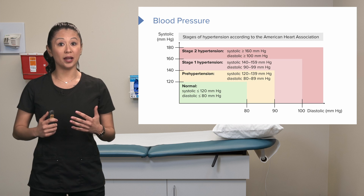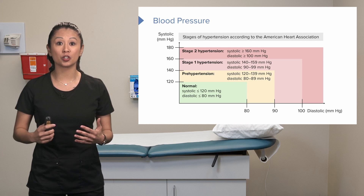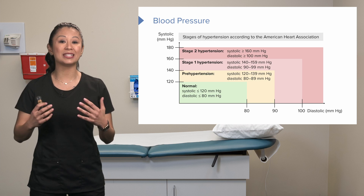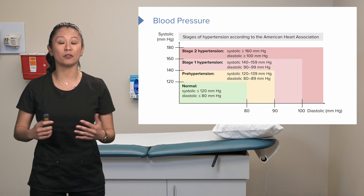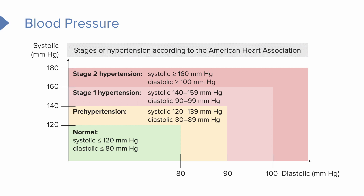Stage 1 can advance to stage 2 if uncontrolled and no treatment has been initiated to lower blood pressure back to the normal range. Stage 2 hypertension is classified as systolic greater than 160 and diastolic greater than 100. Once in stage 2 hypertension, this is definitely a cause of concern — it can affect the heart, heart structures, and perfusion to the rest of the organs.